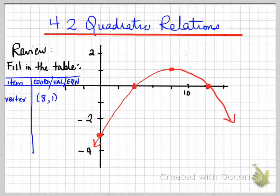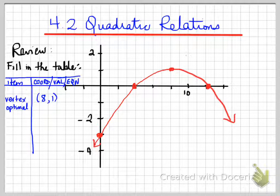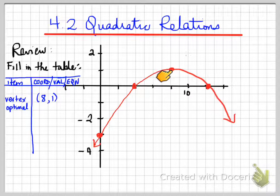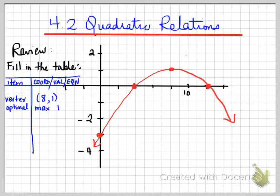So (8, 1). Now the next one we're going to look at is the optimal value. If you remember from the last section, I talked about where the optimal value occurs. Optimal, or optimum, sounds a lot like maximum or minimum — and that is true. That is exactly what an optimal value is. This graph opens down, so it must be a max. The maximum value is 1; it reaches the highest value of 1.